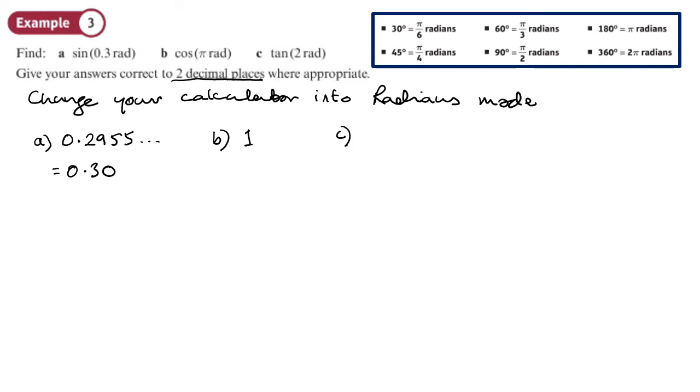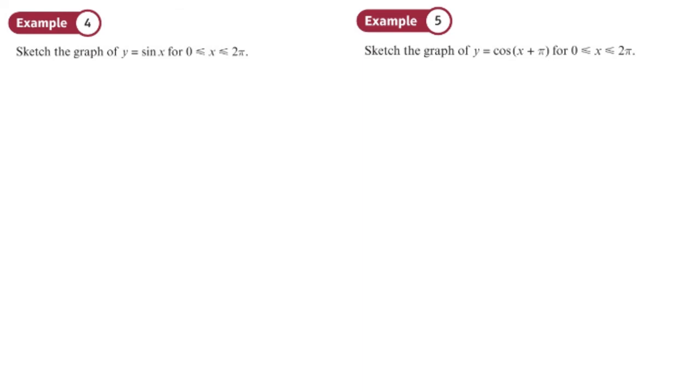And the third one there, the tan of 2 radians. So again, keep your calculator in radians mode. And you'll need to keep your calculator in radians mode for the whole of this chapter, pretty much. Tan of 2 radians. And to two decimal places, 0.03.